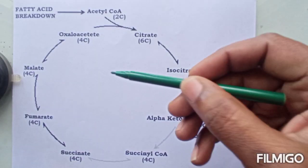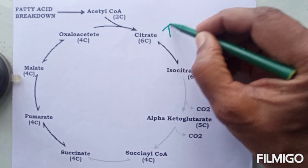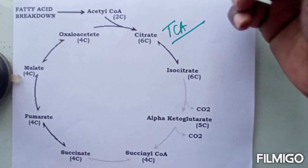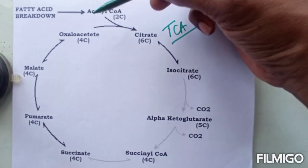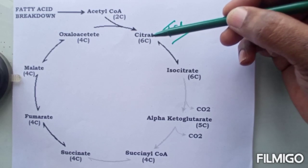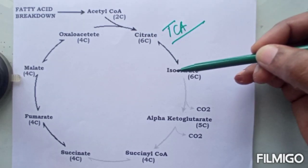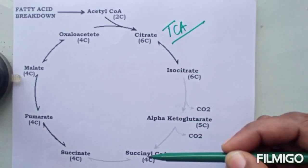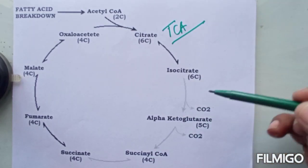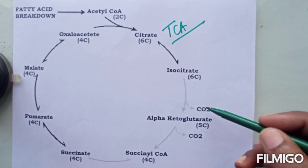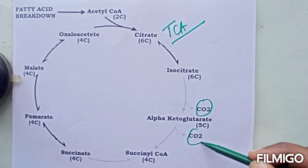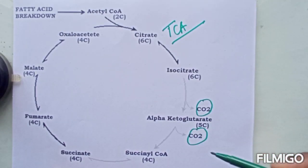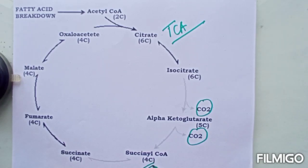In the usual TCA cycle, acetyl-CoA combines with oxaloacetate to give rise to the 6-carbon citrate, then isocitrate, then alpha-ketoglutarate, and then succinyl-CoA. One carbon is lost in the form of carbon dioxide, and another carbon is again lost as carbon dioxide, giving succinyl-CoA, which is a 4-carbon compound.